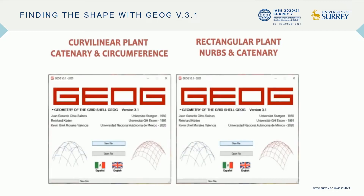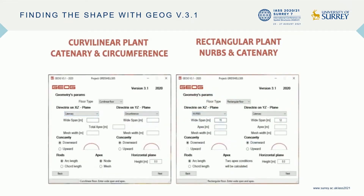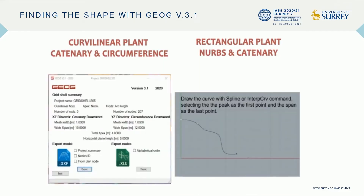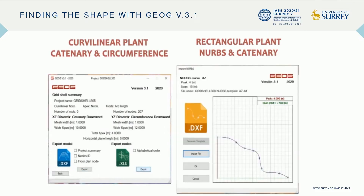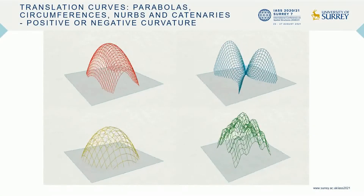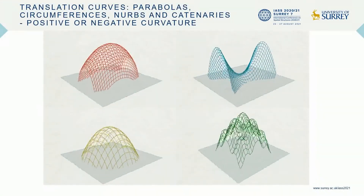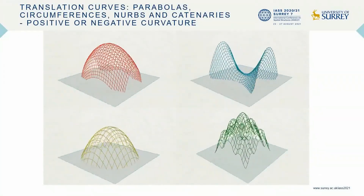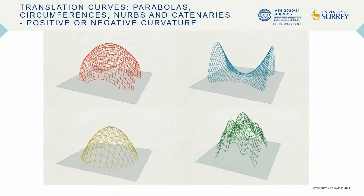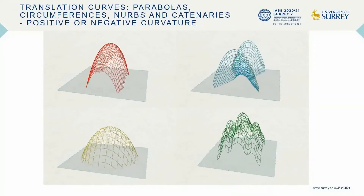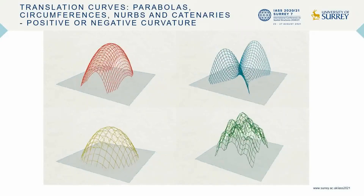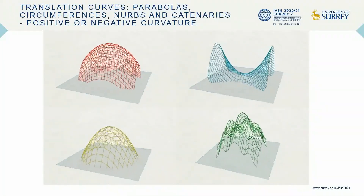The slide shows an example process of generating two grid shells: on the left side with a curvilinear plan using a circumference and a catenary, and on the right side with a rectangular plan using a catenary and a NURBS curve. In this version, besides catenaries, the user can manage parabolas, circumferences, or NURBS as a base curve for each plane. Also, the surface can be defined with positive or negative Gaussian curvature. The slide shows four examples of geometry surfaces generated with GEOG.